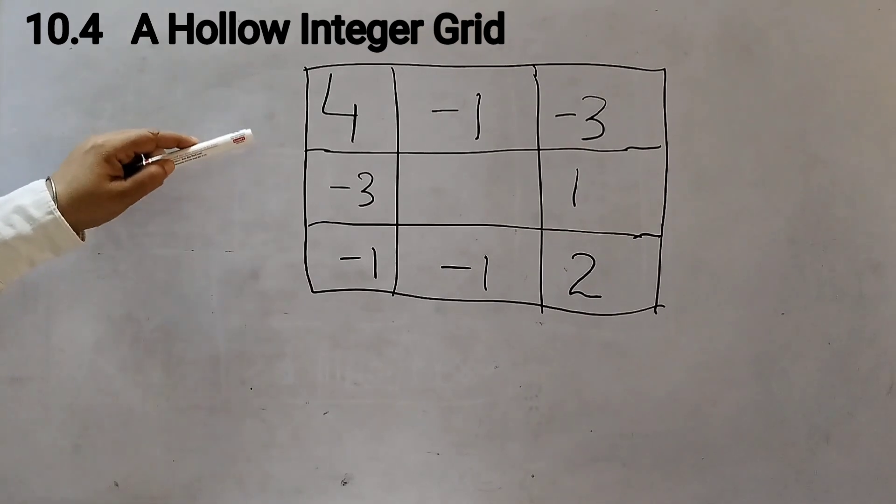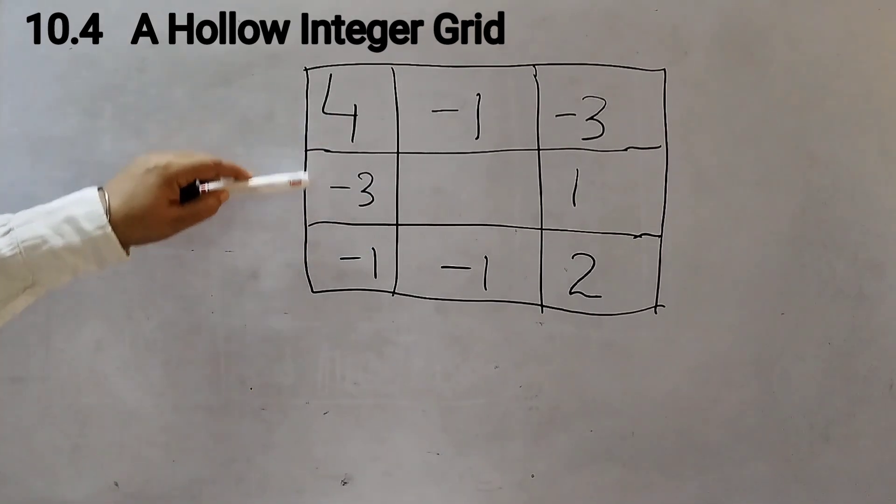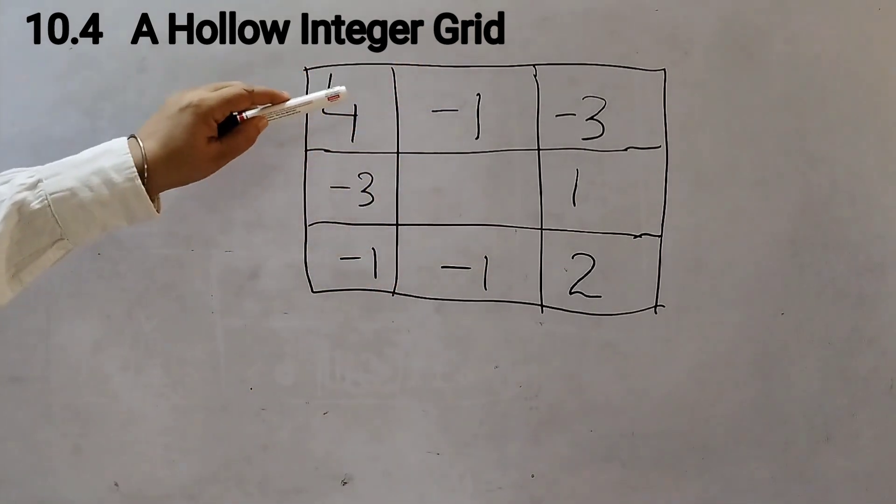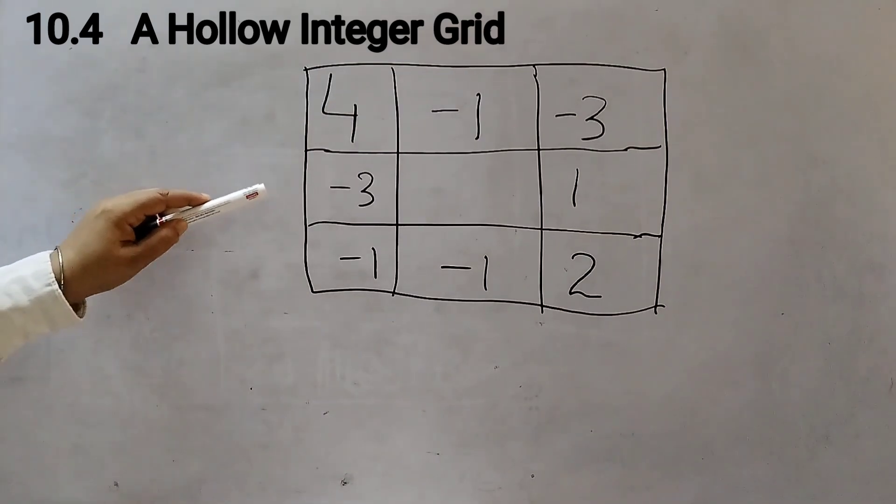A hollow integer grid is given. This is a grid and the numbers are written on the border of this grid. There is something special about the numbers in this grid and let us find out what is special about this grid.